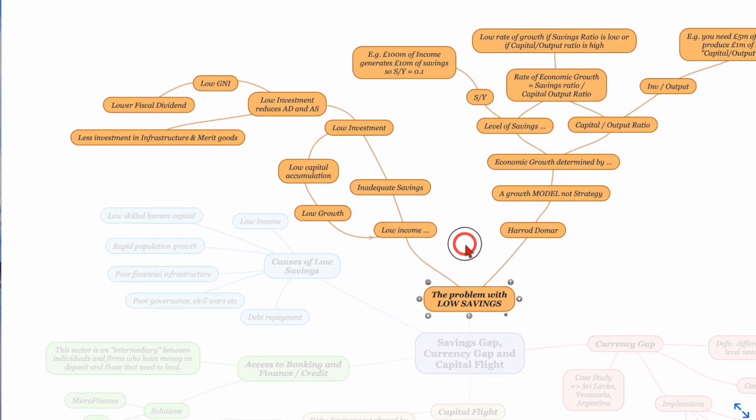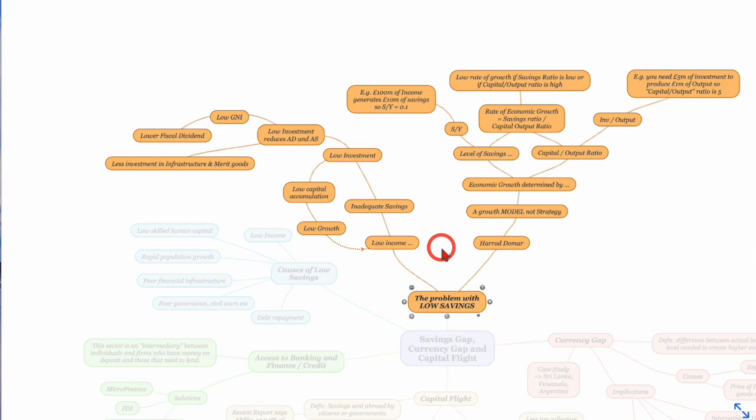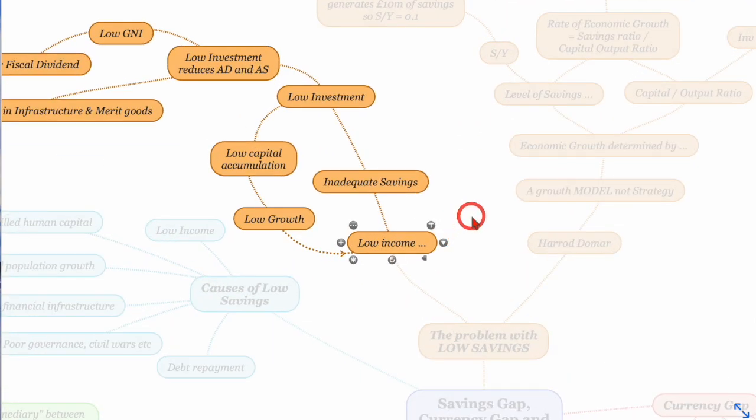But this is the most important thing that we need to look at within this whole video which is this problem of low savings and why it leads to less economic growth and development and then this model called the Harrod-Domar model as well. So let's look at this first.